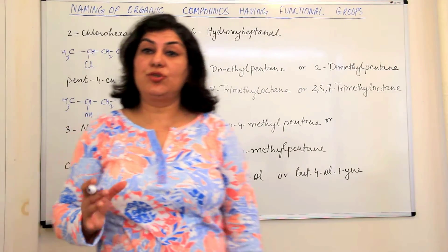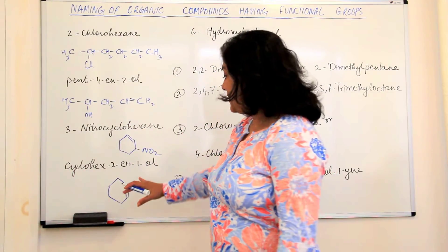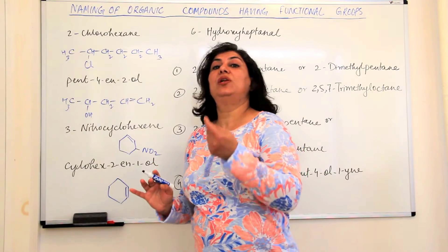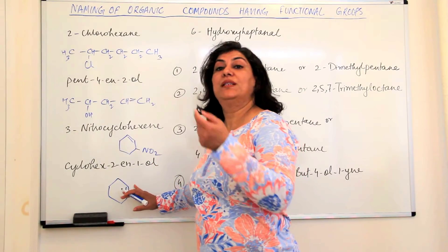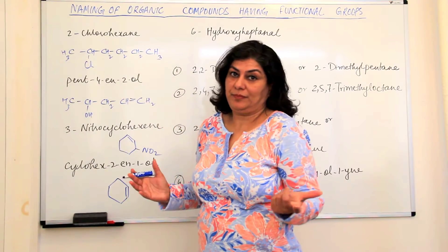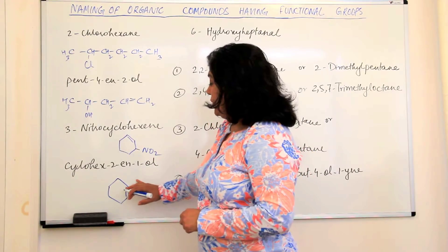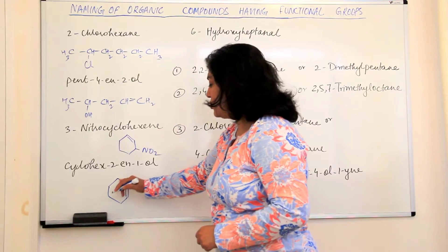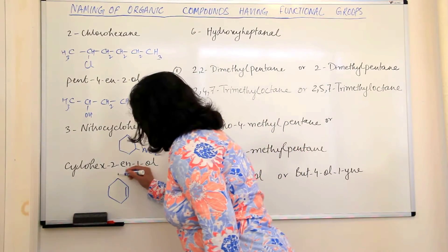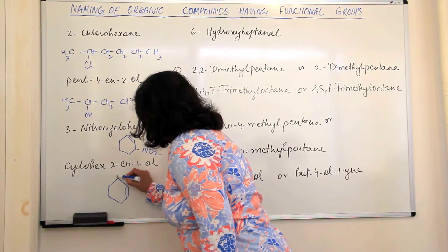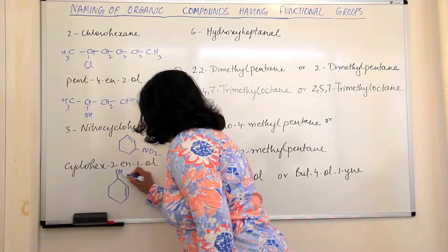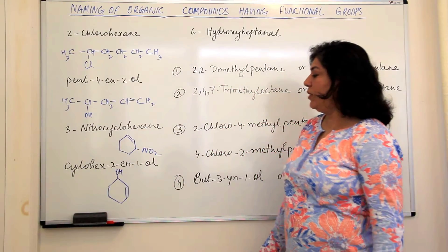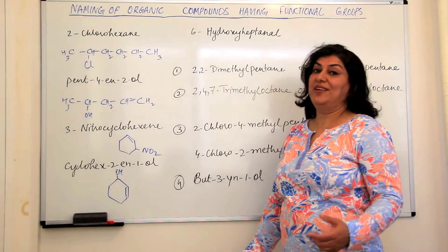According to lower locant rule, even in a cyclic compound, if I say 2, it means 2 is the lower locant and the double bond is between the second and the third carbon. So it is cyclohex-2N and 1-all. So if this was one, so the all, that is OH, should be attached to this carbon. So this is cyclohex-2N-1-all.